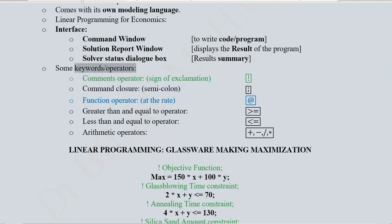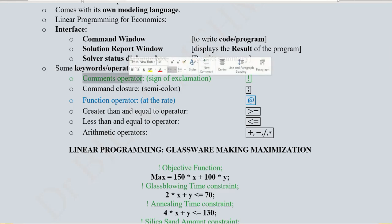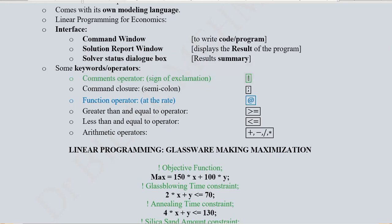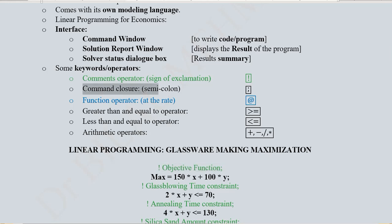Let's focus on the operators or keywords used in LINGO's language — they're very simple. The first is the comments operator, which is the exclamation mark. This is used to write comments that are not executable commands, only for reference — for example, labeling an objective function. The software treats it as a comment and will not execute it. Then we have the command closure operator, the semicolon, which appears at the end of every command.